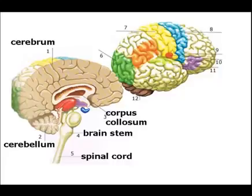As part of the central nervous system, it carries impulses back and forth between the brain and other parts of the body through a network of nerves that extend out from it like branches.